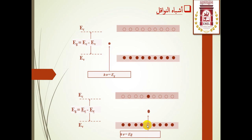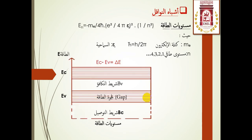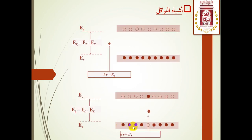عندما يكتسب الإلكترون طاقة بفضل التحريض الحراري أو الأشعة X أو الضوء، فإنه ينتقل إلى المستوى الأعلى. بالنسبة لنصف ناقل من النوع N، عند درجة صفر كيلفن تكون شريط التوصيل ممتلئا بالإلكترونات المرتبطة بالبلورة ولا تشارك في التوصيل. في النصف ناقل نوع N يكون لدينا إلكترون حر يأتي من التطعيم بذرة خماسية التكافؤ، فتصبح الذرة أيونا موجبا لا يساهم في التوصيل، والإلكترون المحرر هو الذي يساهم وينتقل إلى حزمة التوصيل.